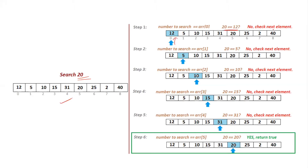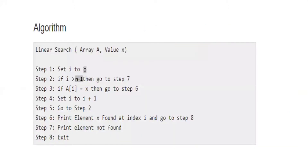If the current element is not equal, we check the next element. If it is not matching, we check the next one — for example 10 is not matching, then 31 is not matching. When 20 equals 20, the search is successful and we return the index position of that element.